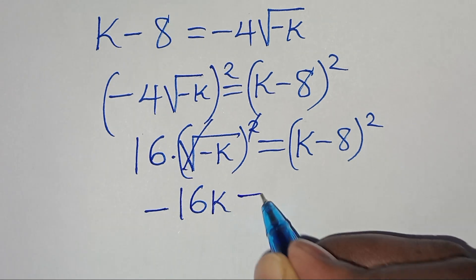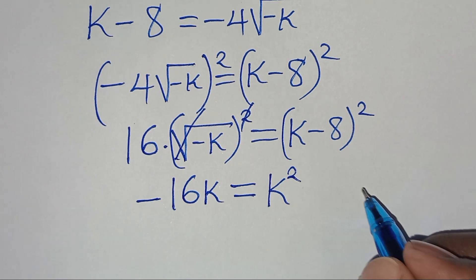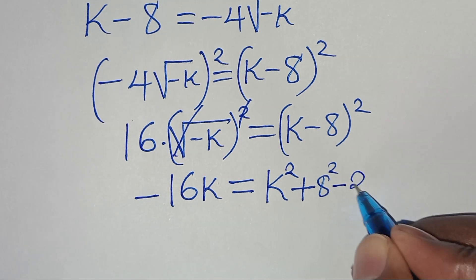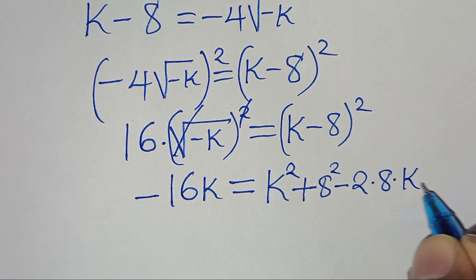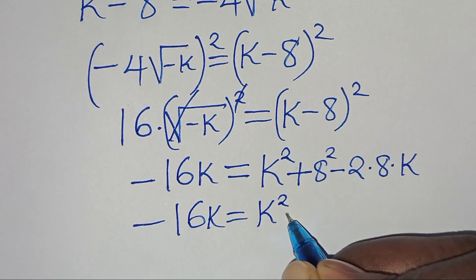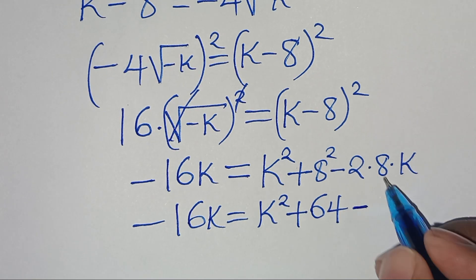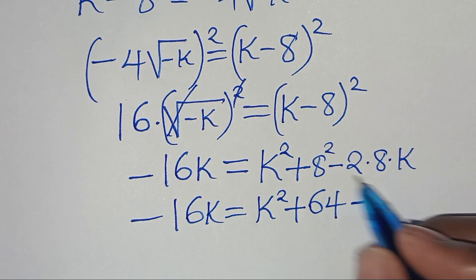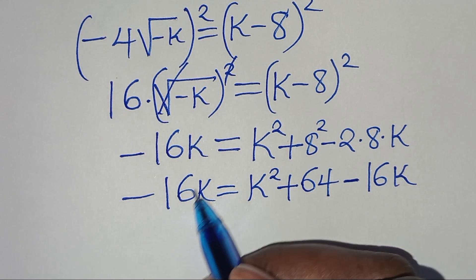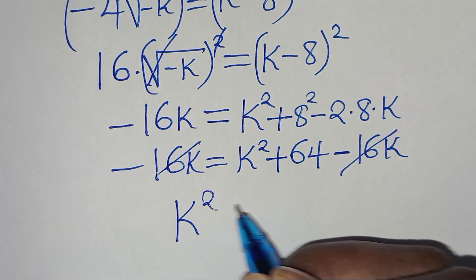Expanding (k − 8)²: we get k² plus 8² minus 2 times 8 times k, which is k² + 64 − 16k. So we have minus 16k equal to k² + 64 − 16k. The minus 16k terms cancel on both sides, leaving us with k² + 64 equals 0, which means k² equals minus 64.